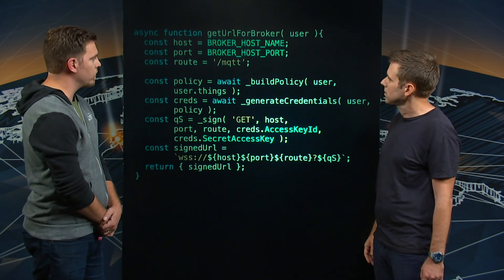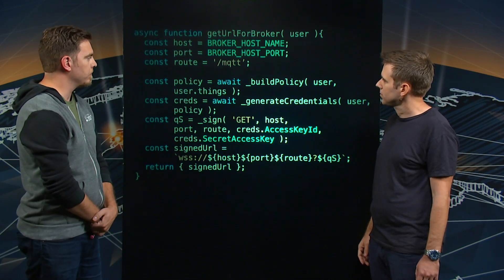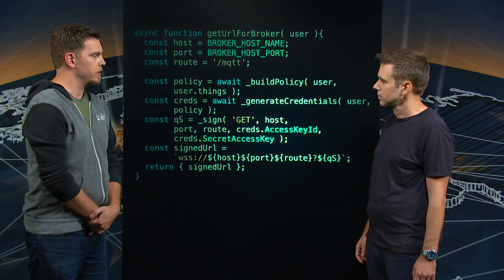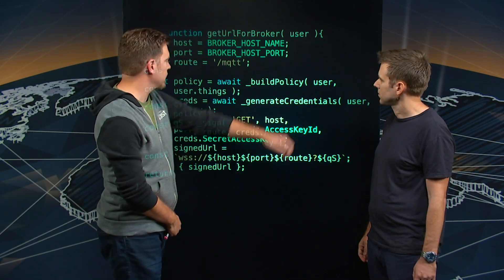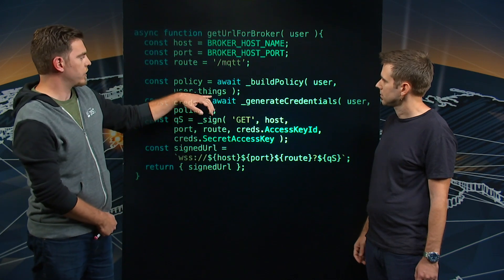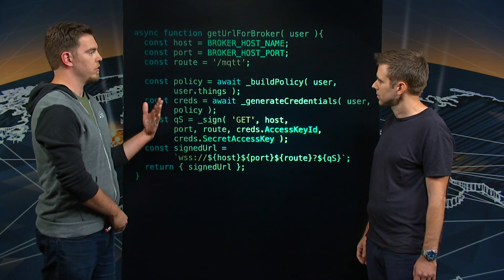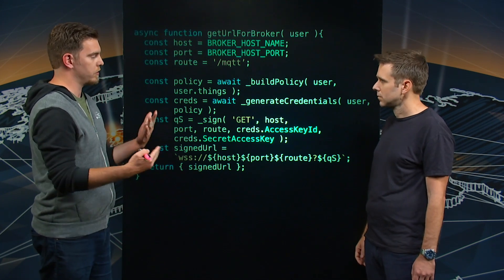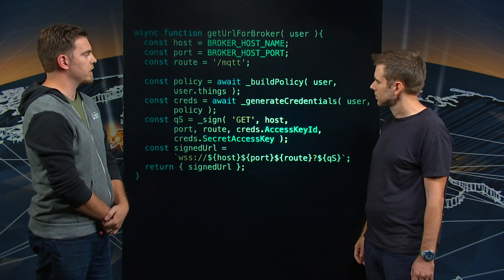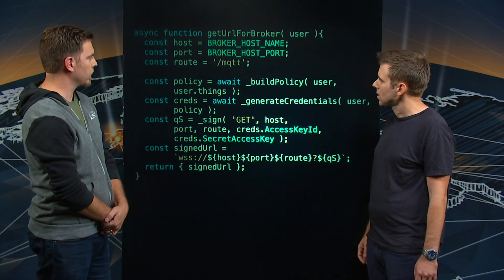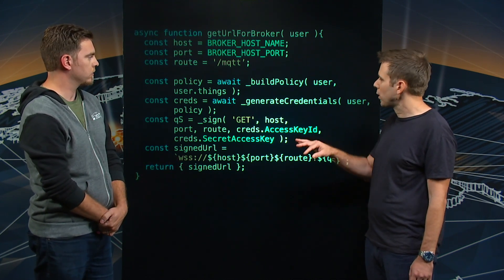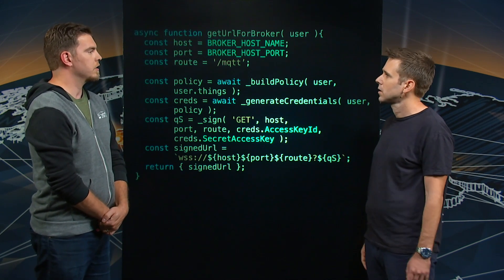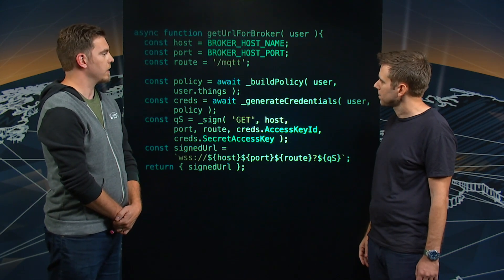Sure, I'd be happy to. So the first step here, build policy, is generating a custom IAM policy that relates this user to this user's things — that is, the association between the user and, for example, if they've purchased a smart light bulb. It's the relationship between those two, and it defines that in terms of IAM. And on the back end, how do you know which users are authorized to access which things? In this case, we're using DynamoDB to map the user to the things that they own.